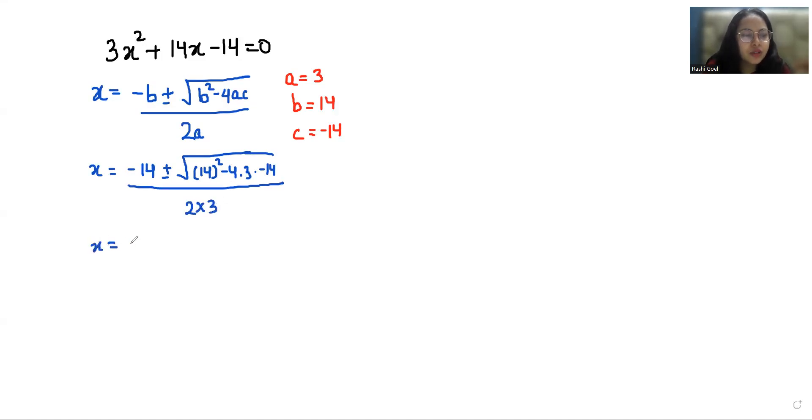So x equals minus 14 plus minus under root 14 square is 196. Now 4 times 3 is 12, and 12 times 14 is 168. Negative negative is positive, by 6.